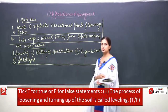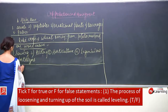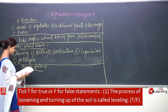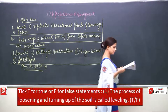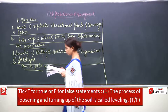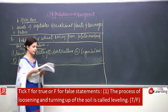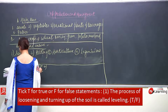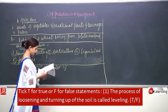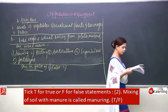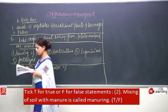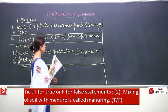Now true or false. First: the process of loosening and turning up of the soil is called levelling — of course it is false, that is tilling. Second: mixing of soil with manure is called manuring — true, absolutely correct.